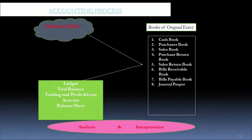Thereafter you went on to make your financial statements. The financial statements were namely trading account, profit and loss, and your balance sheet. You also made a manufacturing account if you had a manufacturing unit.